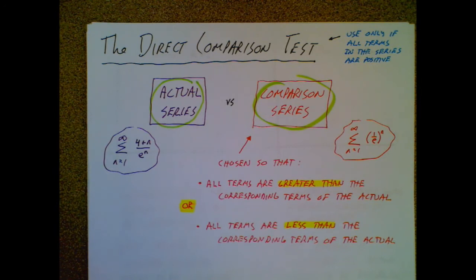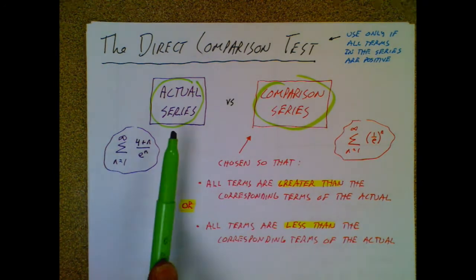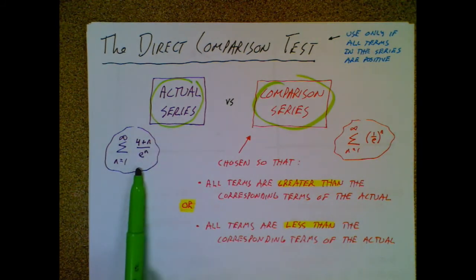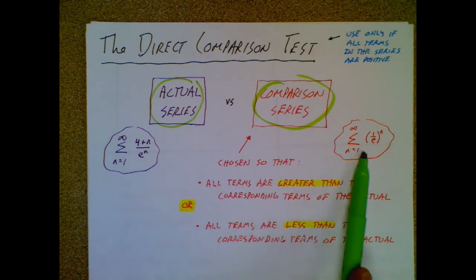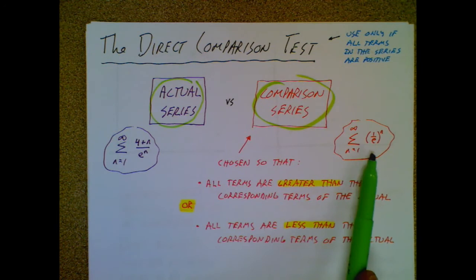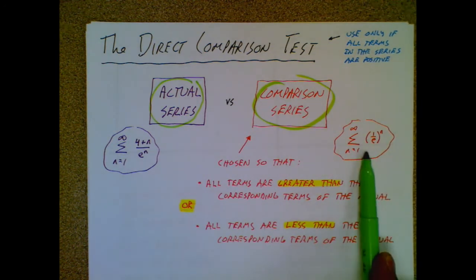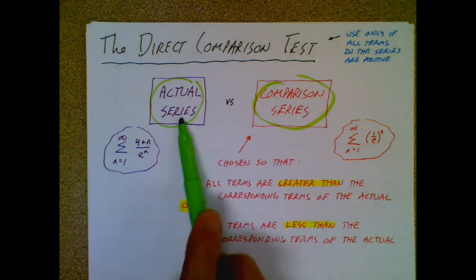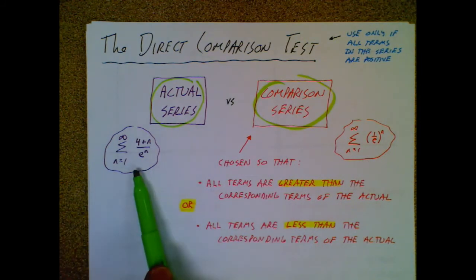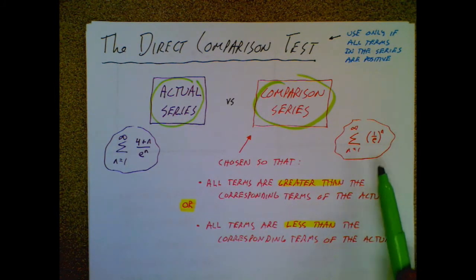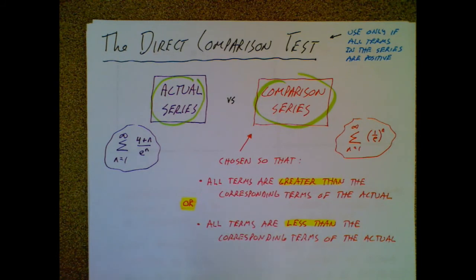We're going to start with kind of a big picture, and it'll seem weird — like, why are we doing this? We're taking an actual series and trying to determine convergence or divergence. To do that, you're going to thoughtfully choose a comparison series. Out of thin air, you're going to write down another series. You choose this comparison series thoughtfully; it has to satisfy certain requirements. Depending on what you're shooting for, you'll choose this series to have all its terms either greater than or less than the terms of the actual series.